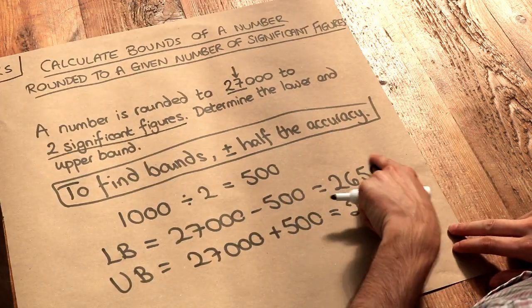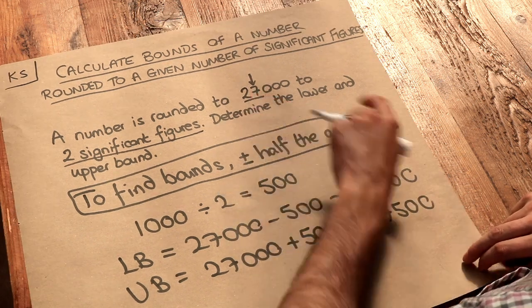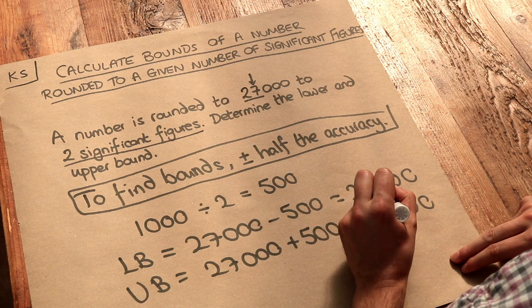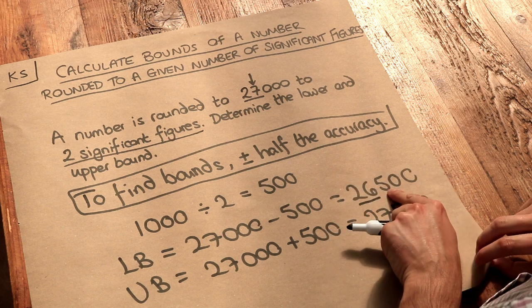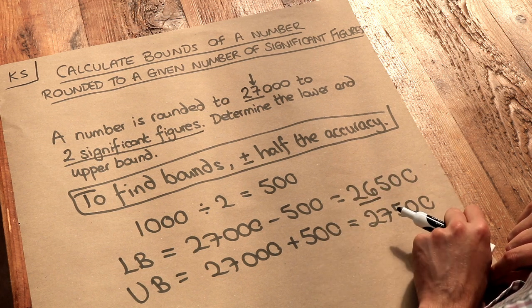So that means that this is the lowest number that we could have originally had that would have rounded to 27,000. And indeed, when we round this to two significant figures, we look at the first two digits, we look at the next digit, is that five or above? Yes, it is. So that goes up to seven, so we'd have 27,000.